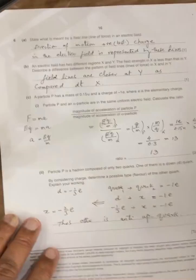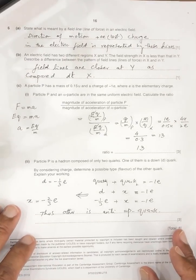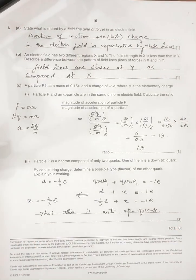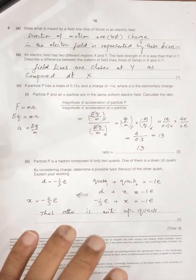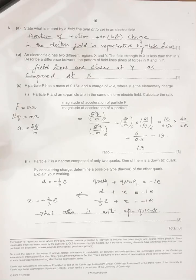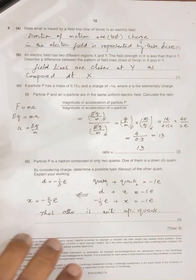And the next is state what is meant by the field line in the electric field. So direction of the motion of the positive test charge in the electric field is represented by the field lines. These field lines represent the direction of the motion of the test charge after experiencing the force. Next, an electric field has two different regions X and Y. The field X is less than the field in Y. The field strength, definitely. Field strength is represented by the gap between the lines. So the field lines are closer at Y as compared to at X.